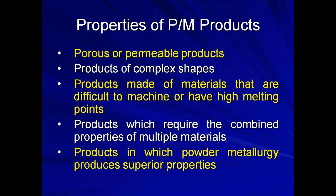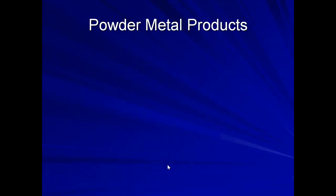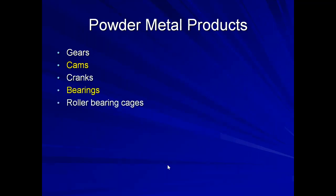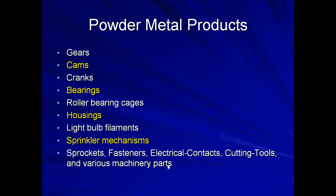Powder metallurgy can also produce products with superior properties — for example, engine parts where porosity is a desirable property. Examples of powder metal products include gears, cams, cranks, bearings, roller bearing gauges, housings, light bulb filaments, sprinkler mechanisms, sprockets, fasteners, electric contacts, cutting tools, and various machinery parts. There are many other products that can be manufactured using this method.